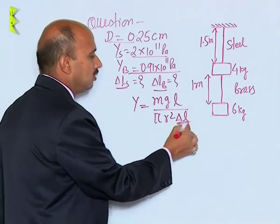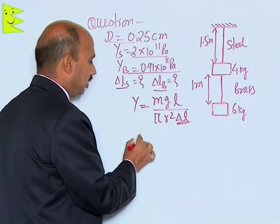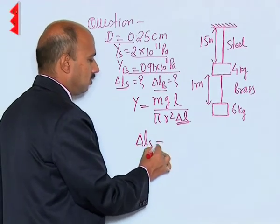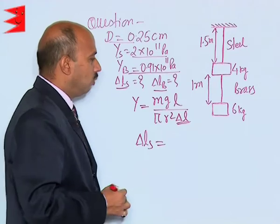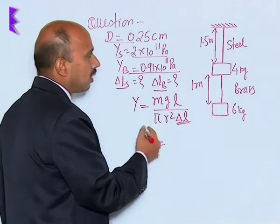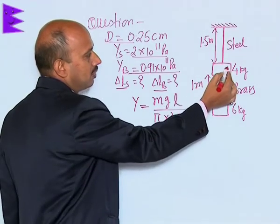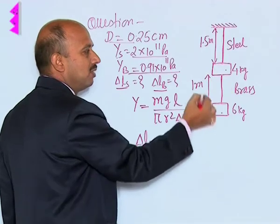We need to find ΔL for the steel wire. The increase in length of the steel wire - for this steel wire, both weights are acting.